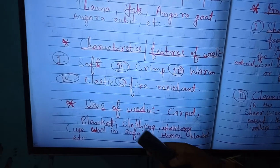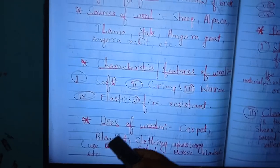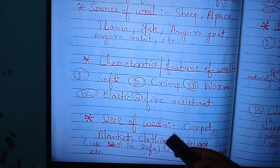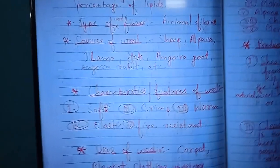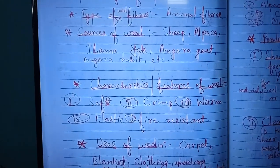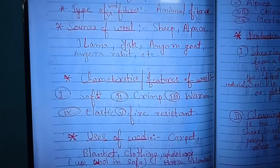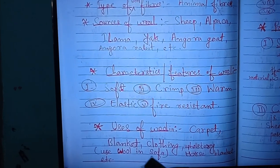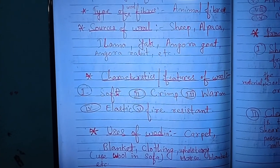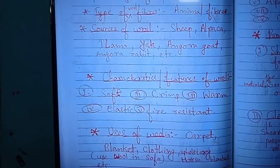Now we are going to talk about the uses of wool, my dear students. Wool is used in carpets, blankets, clothing, upholstery — meaning wool is used in sofas, horse blankets, etc.